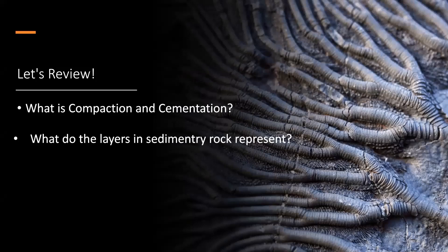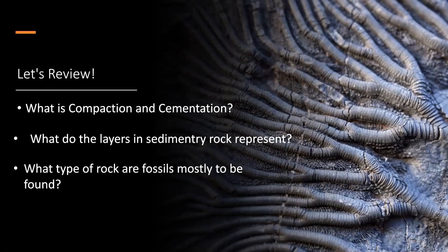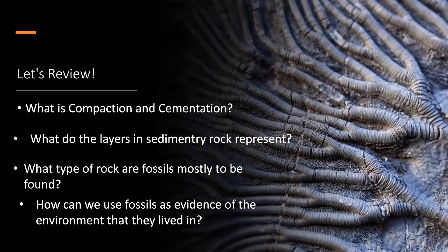What do the layers in sedimentary rock represent? As we learned, the sediment settles and forms layers. The layers actually represent the different types of environments that were present in that location at the time when the layer formed. What type of rock are fossils most likely to be found in? If you said sedimentary rock, you're absolutely right. How can we use fossils as evidence of the environment that they lived in? We can use fossils as evidence to see how the environment has changed over time.